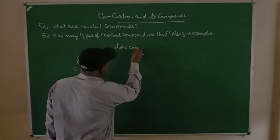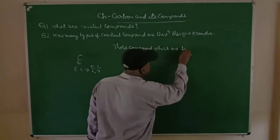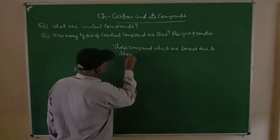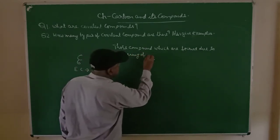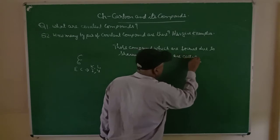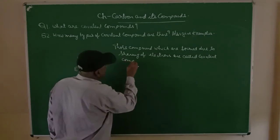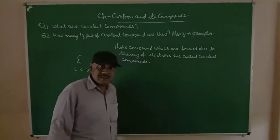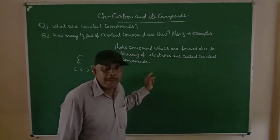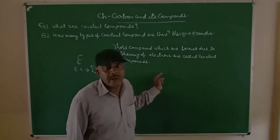Now we are in a position to give the definition of covalent compounds. Those compounds which are formed due to sharing of electrons are called covalent compounds. Here, only sharing of electrons takes place — no formation of ions occurs.